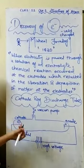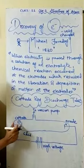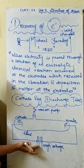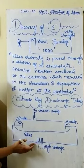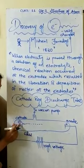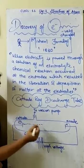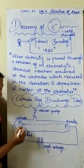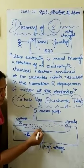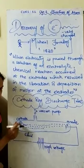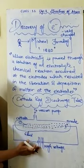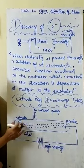When Michael Faraday applied high voltage through the electrodes, he found out a stream of particles which were traveling in a straight line from cathode to anode, and they were reaching the anode. This was possible at high voltage.